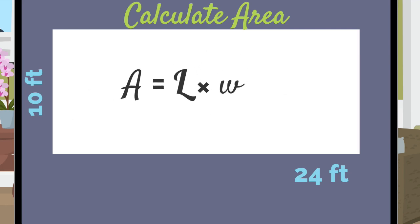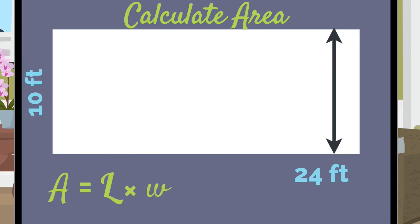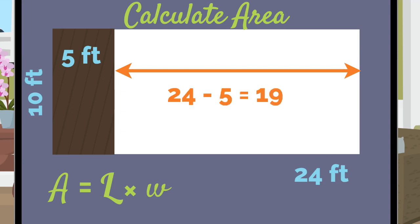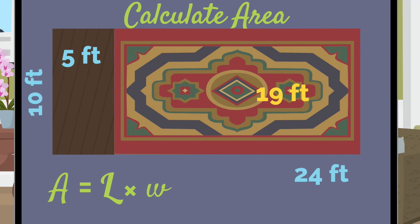I can separate the room anywhere along the 24 foot length. For example, I could have a 5 foot wide section of wood for the dining area. The living space would then be 24 minus 5 or 19 feet long. I can find the area of the hardwood and carpet by multiplying the width, 10 feet, by the length of each section. 10 times 5 is 50 square feet for hardwood. 10 times 19 is 190 square feet for carpet.